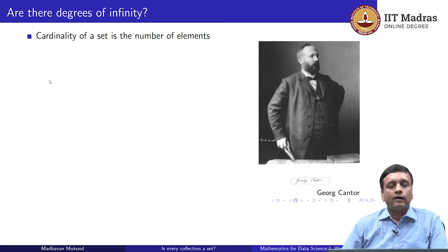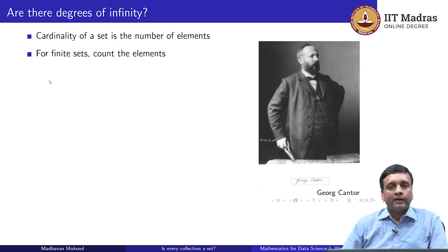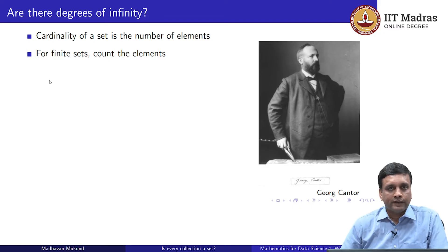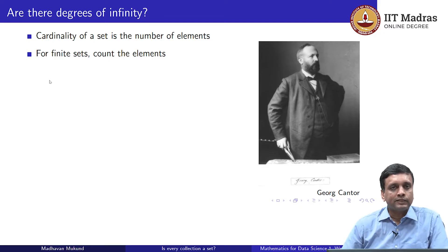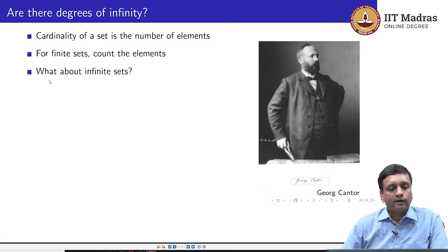We know that for a set, the cardinality denotes the number of elements. And if it is a finite set, we just have to count those elements. So for a finite set there is no problem about cardinality — we just count the number of elements and we are done. We get a natural number which is the cardinality of the set. The question is: what do we do for infinite sets?